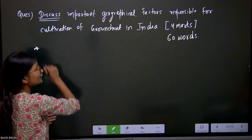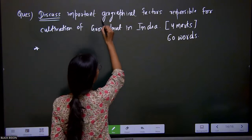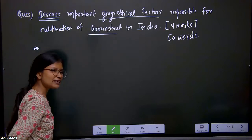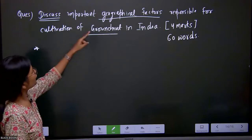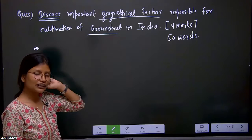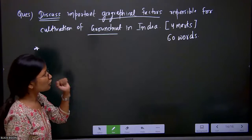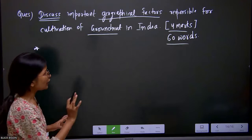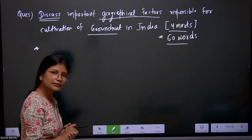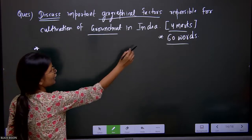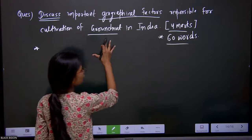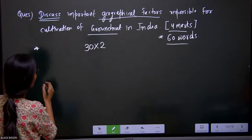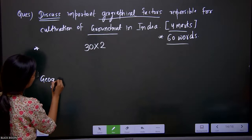We also have to talk about the geographical factors responsible for the cultivation of groundnuts — the important geographical factors for the production or cultivation of groundnut in India. This question is for four marks and 60 words. Primarily we will see the word limit: 60 words. So we will divide our question into two parts, that means 30 words each — two paragraphs of 30 words each.